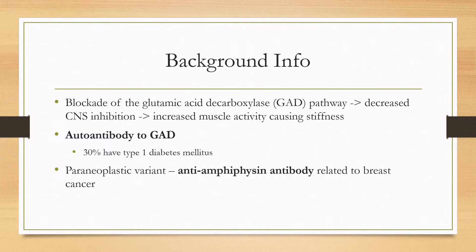There is characteristically an autoantibody to GAD in most patients with non-paraneoplastic disease. Remember that GAD is associated with type 1 diabetes, so about 30% of these patients will have type 1 diabetes. In the paraneoplastic variant, a different antibody is associated — anti-amphiphysin — and that is related to breast cancer.